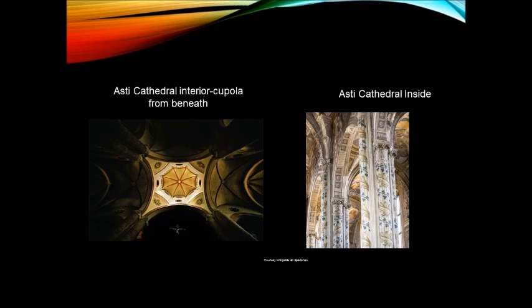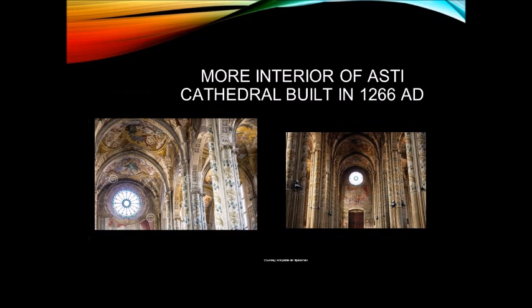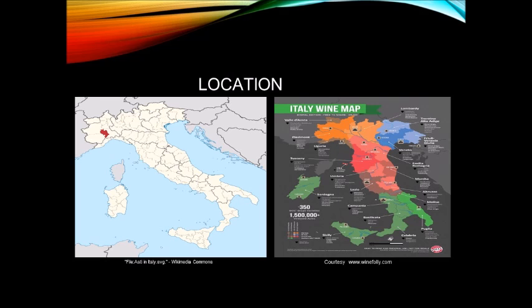Vinification of Rhone Valley: northern uses traditional vinification — single grape varieties; chestnut casks sometimes used. In the southern, also traditional methods, but blends are very common.